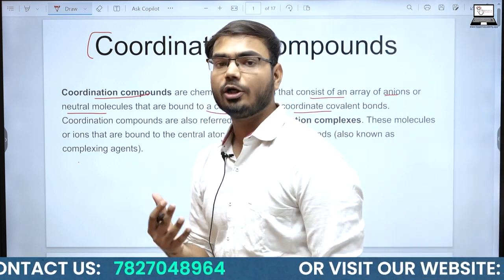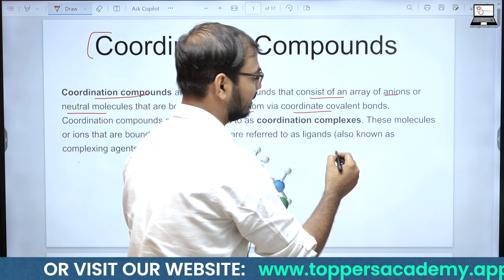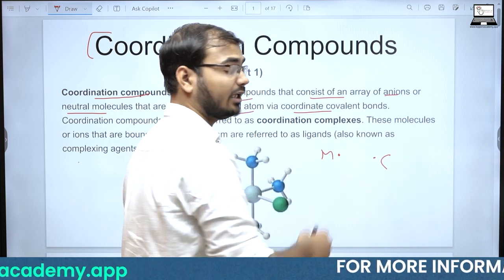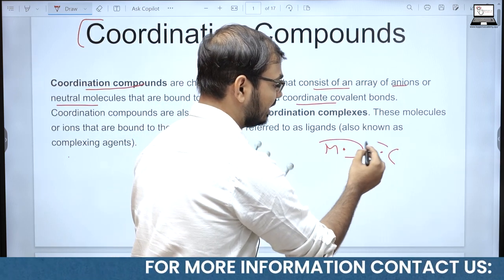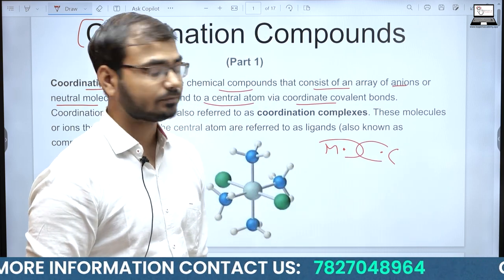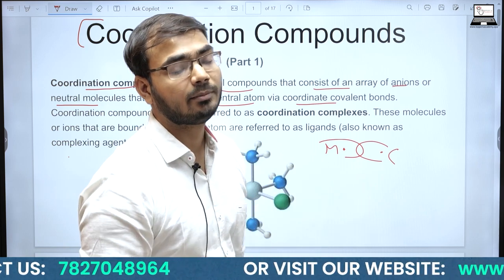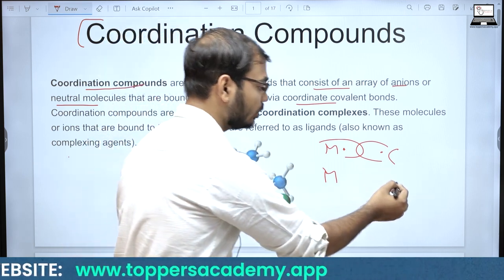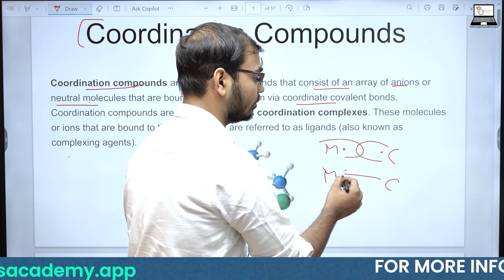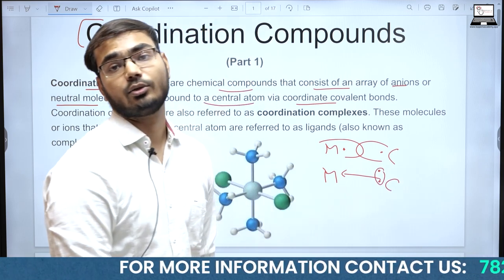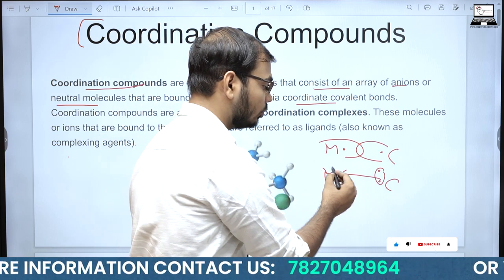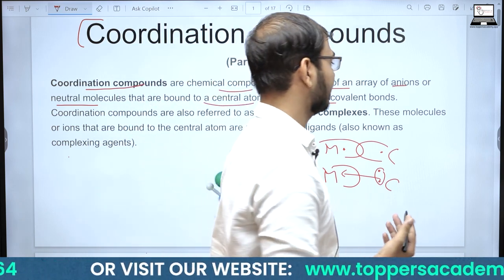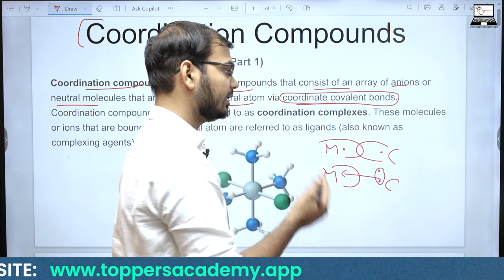Coordinate Bond होता क्या है? Coordinate Bond, Covalent Bond का एक Special Type है। Normal Covalent Bond में एक atom एक electron contribute करता है और दूसरा atom एक electron contribute करता है, और overlapping की वजह से Normal Covalent Bond बनती है। लेकिन Coordinate Bond एक exception है — यहाँ दोनों electrons single atom contribute करता है, और दूसरे atom के पास एक empty orbital होना चाहिए जो electrons receive करे।